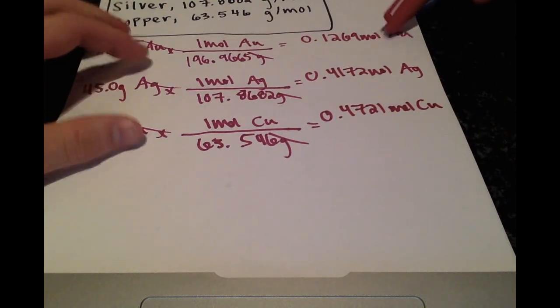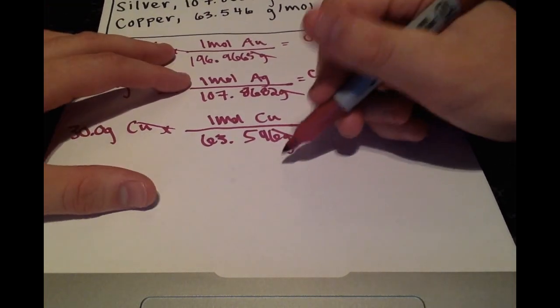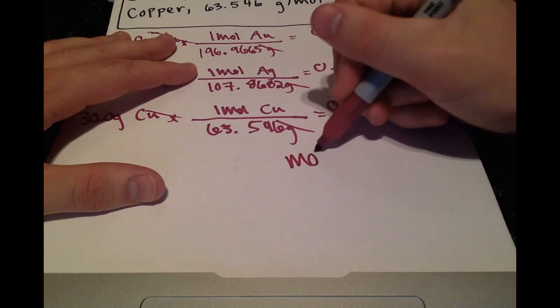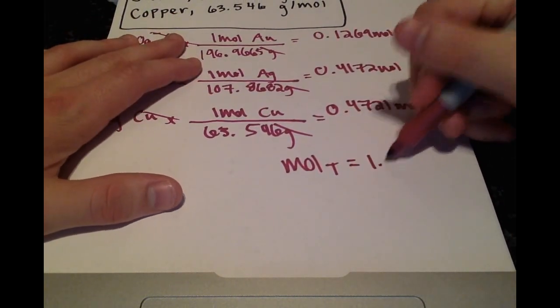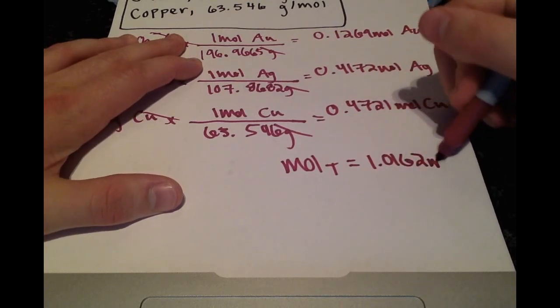And now that we have the moles of each component, at this point, we're going to want to calculate the total moles, which is just taking the sum of all these, and we get 1.0162 moles.